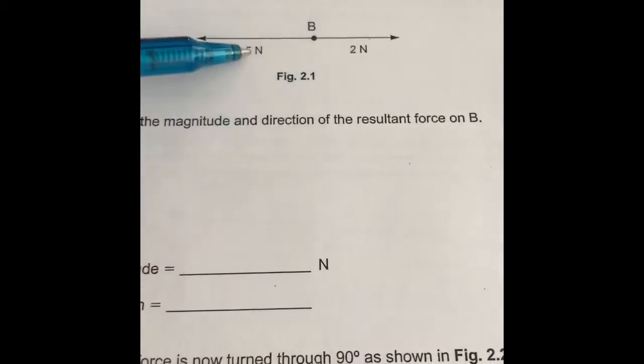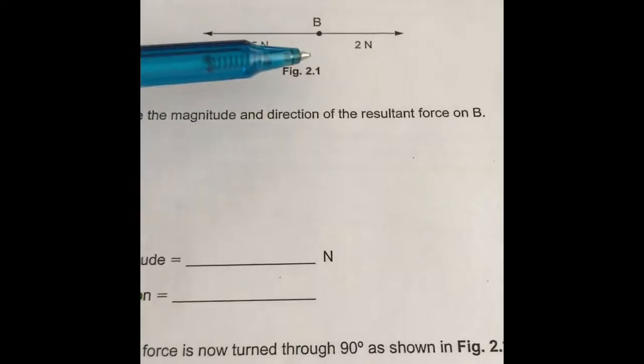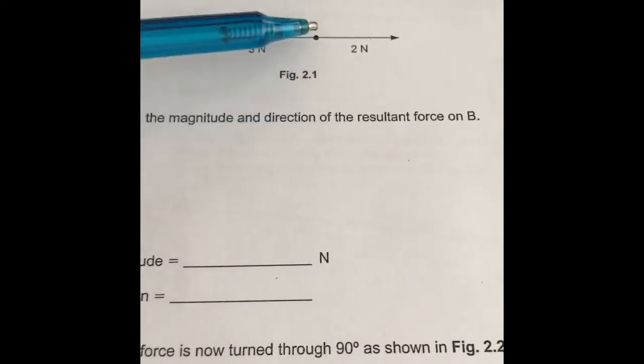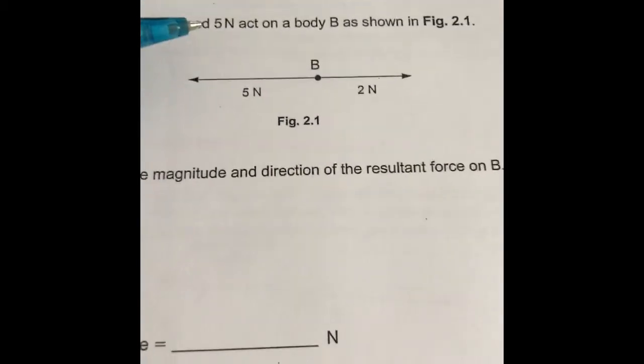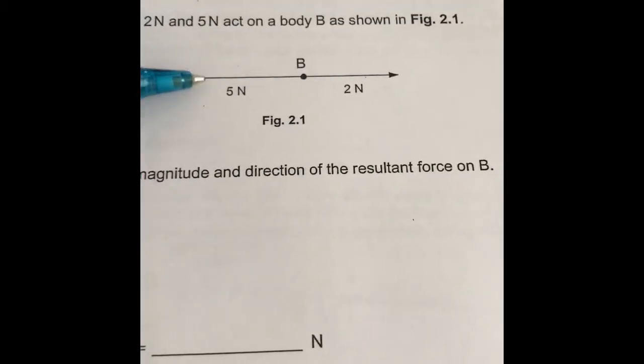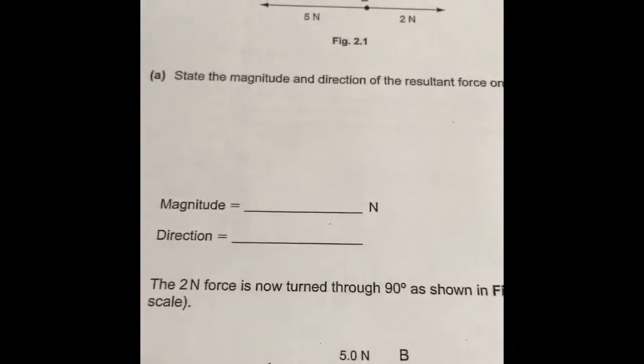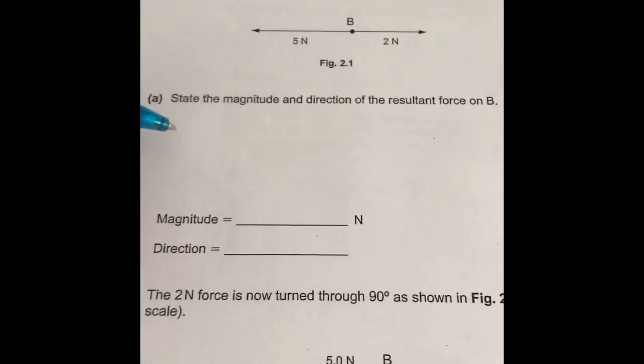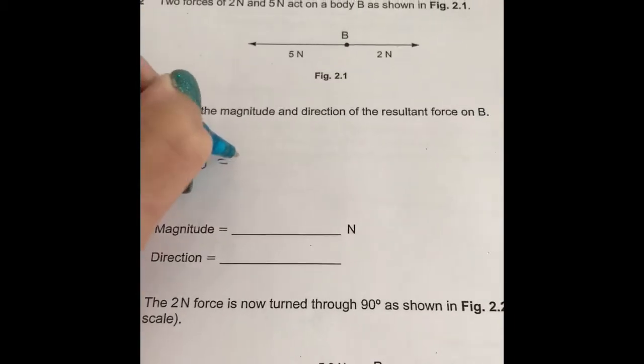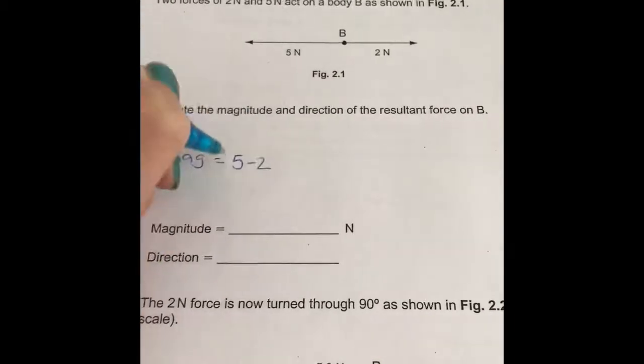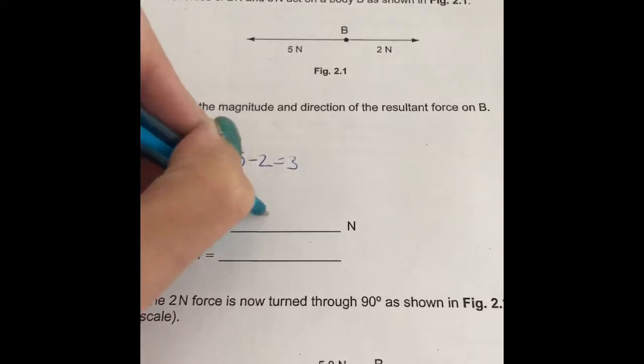So because these two forces are not equal and they're acting in opposite directions, there's a resulting force. They're not acting at right angles, they're just acting in opposite directions. So all you simply have to do here is just take these two numbers away to find the magnitude.